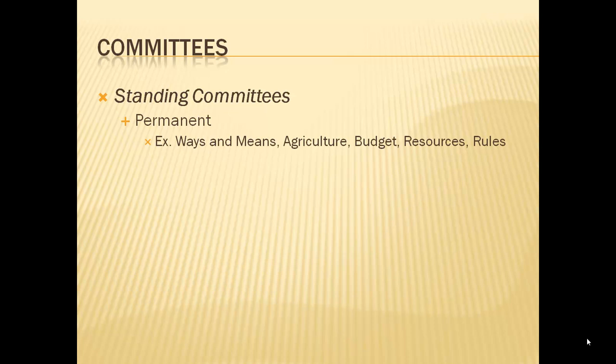Examples of standing committees include Ways and Means, which deals with budgeting — how much money we're taking in, how much we're going to pay out, all that kind of stuff. Agriculture is another, because we're always going to have to deal with agriculture issues, farming, budgeting, and resources. Rules is another example. These are all different examples of standing committees.